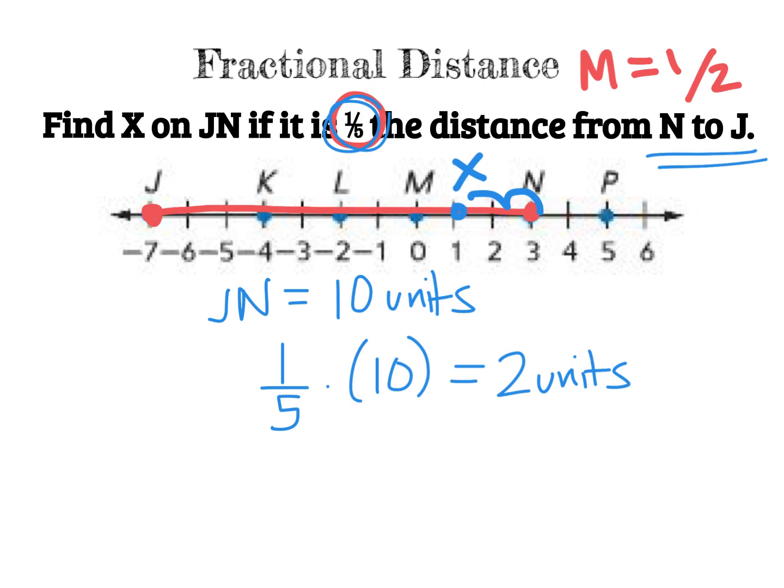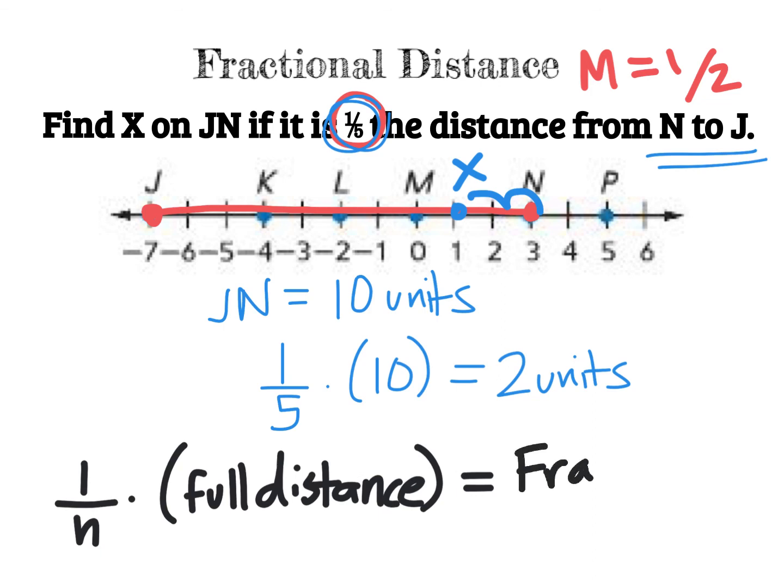So if I were to create a formula here, this is what I would say. I would multiply the fractional distance that I'm interested in times the full distance. And that will give me the fractional distance that I'm interested in. Now, the fractional distance is not the answer. Remember, we're locating points in this unit. We're trying to find the location of a point. So you take the fractional distance, and you start counting on the number line to see where you're looking for. Where is it located? And in this case, X happened to be at one.